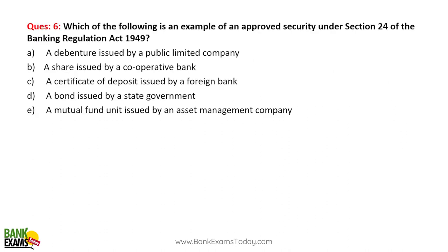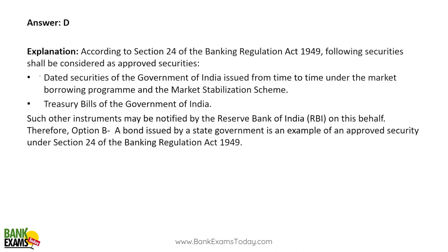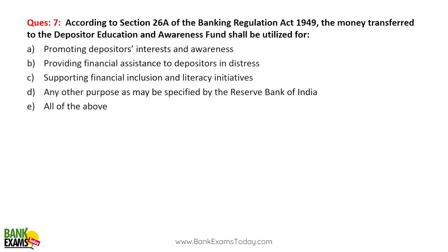Question: Which of the following is an example of an approved security under Section 24 of the Banking Regulation Act? Options include a bond issued by the government, debenture, share, CD, or mutual fund. Debentures, shares, CDs, and mutual funds are not approved securities. A bond issued by the state government or T-bills issued by the Government of India are approved securities as per the Banking Regulation Act.